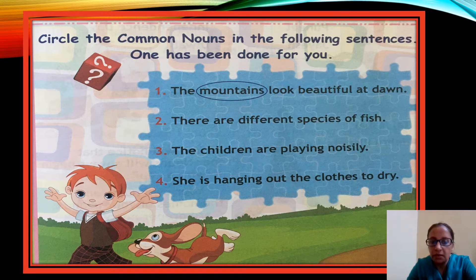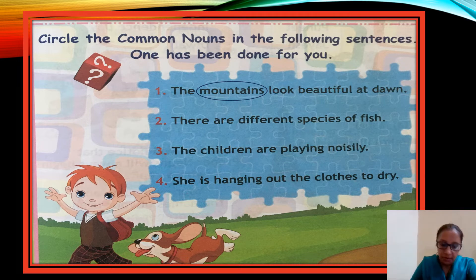Number two: 'There are different species of fishes.' We are talking about many different fishes, but no particular fish is specified. So 'fish' is a common noun, and we will circle 'fish'.